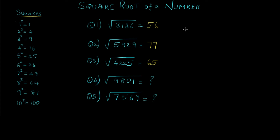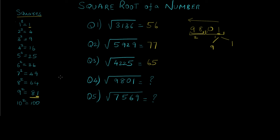Now let's see question number 4, which is 9801. Making pairs starting from right to left — this is the first and this is the second. Observing the units place of the first group: 1 occurs at the units place in 1 squared and 9 squared. So the possibilities are that the units place of the answer would be either 1 or 9. For the tens place we compare 98 with all the square values, and the largest number equal to or less than 98 is 81, meaning the tens place value is 9. Now we need to decide which number, 9 or 1, takes the units place.